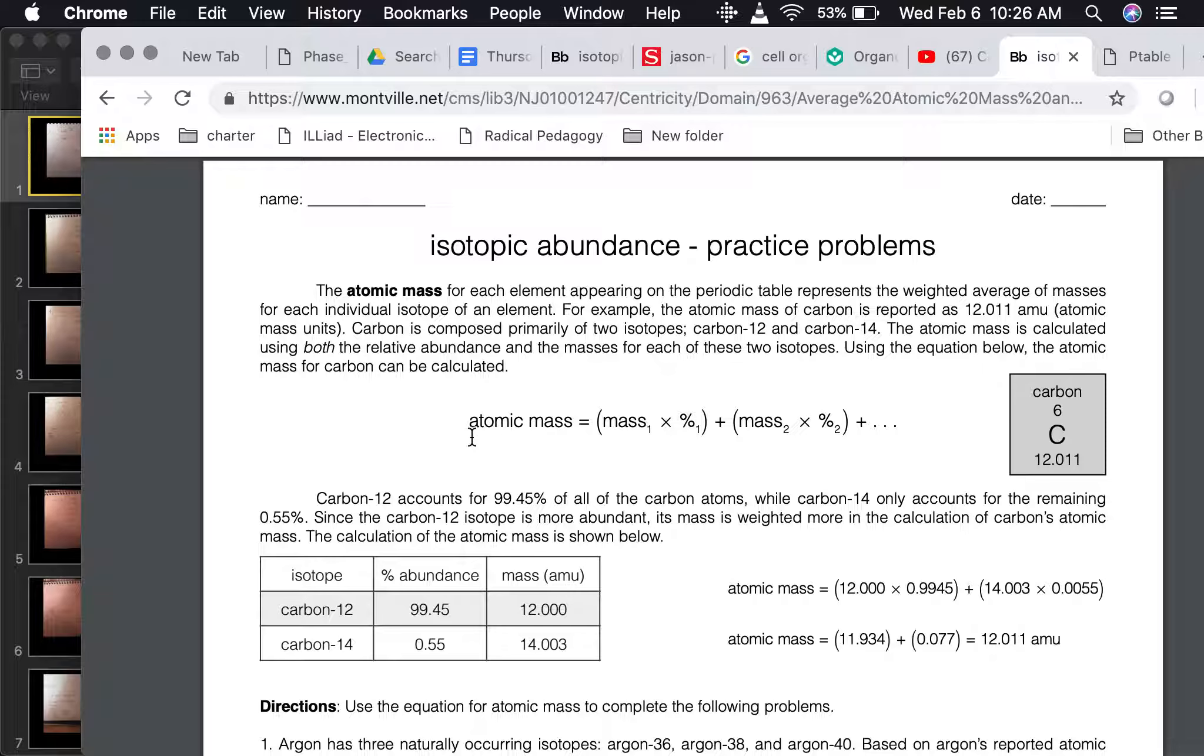Remember to find the atomic mass if we have isotopes, we would take the mass of the first isotope, multiply it by the percentage, the abundance percentage which we have here, and you have to convert that to a decimal. So we would take this 99.45, move the decimal place two times, and this is what it would look like as a decimal. Then you just multiply these two and add them together to get your final atomic mass. Make sure you have your units for AMU.